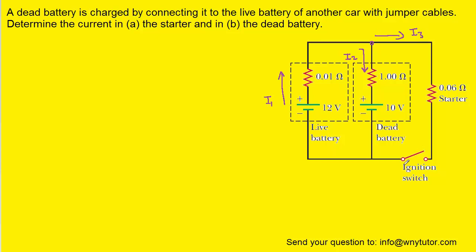What we will do next is imagine that this ignition switch is closed, forming a complete circuit around the outer perimeter of the circuit, and we're going to apply Kirchhoff's loop rule. And to do that,